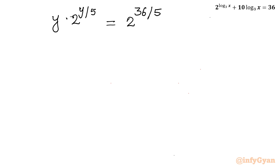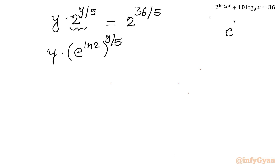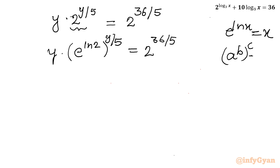Now I can use the exponential property: 2 can be written as e^(ln 2), so y times 2^(y/5) becomes y times (e^(ln 2))^(y/5). Using the property (a^b)^c = a^(bc), this becomes y times e^(y·ln2/5), equal to 2^(36/5).